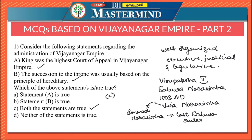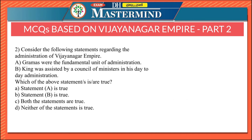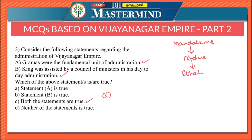The second question considers statements regarding the administration of Vijayanagara Empire. Statement A says gramas were the fundamental unit of administration; Statement B says the king was assisted by a council of ministers in his day-to-day administration. Both statements are true — Option C. The empire was divided into mandalums, which were divided into nadus, nadus into sthalas, and sthalas into gramas, making gramas the fundamental unit.